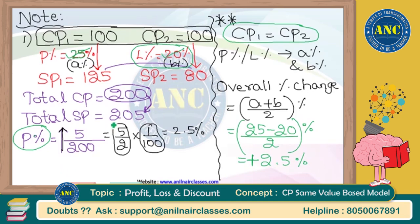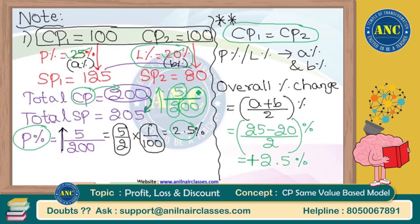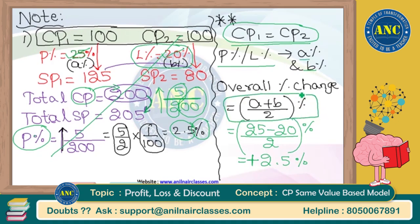Always remember: when calculating profit percentage, the denominator is always your initial value, i.e., cost price. The numerator is how much increase is happening. 200 becoming 205 means an increase of 5, so 5/2 = 2.5, and 1/100 gives the percentage. But using the key point formula directly — (A + B) / 2 — is much faster. That is key point number one.